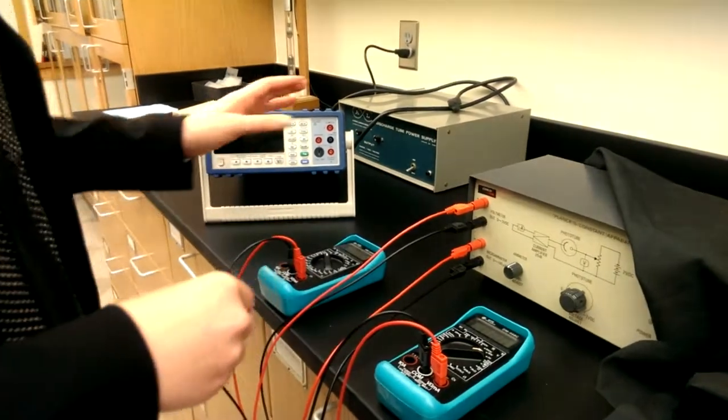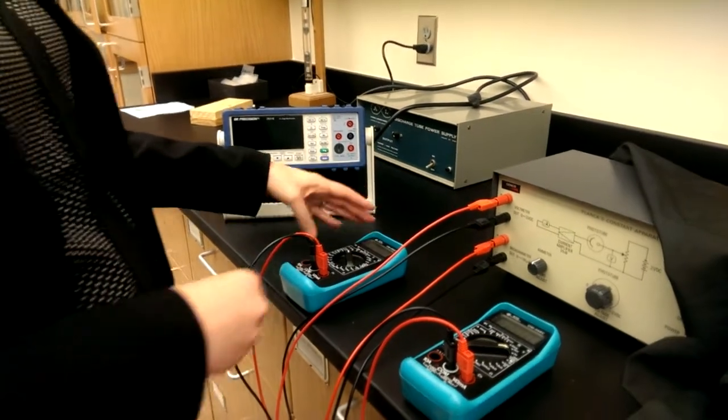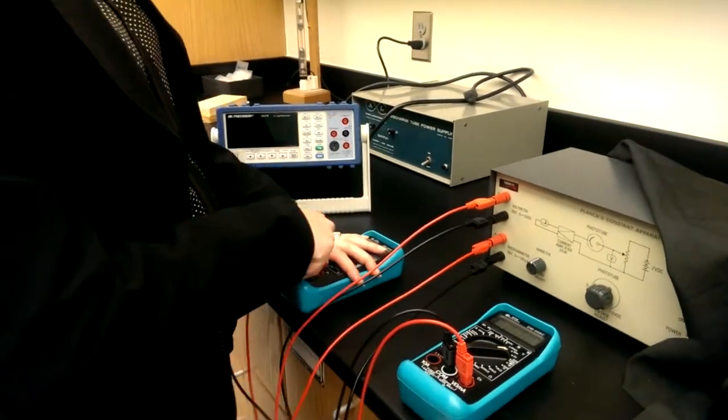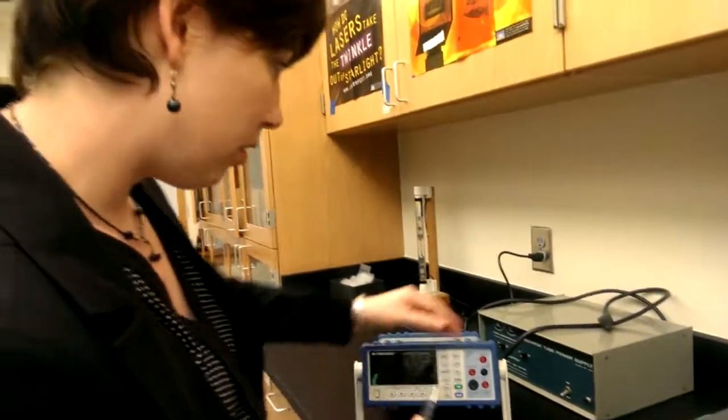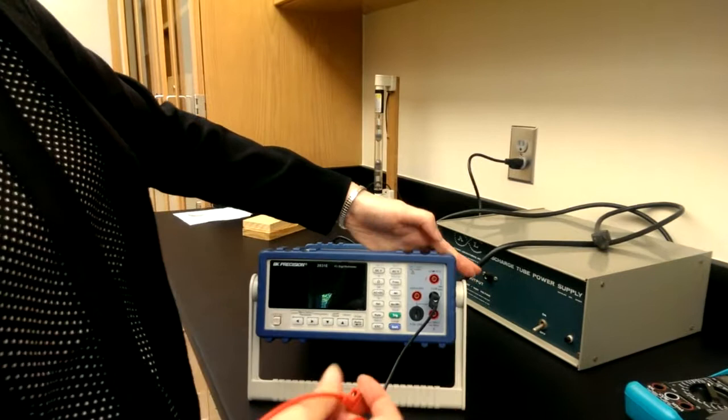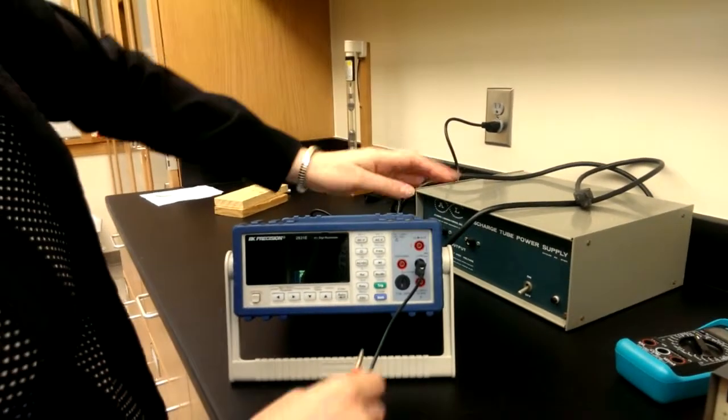So what I would recommend that you do instead: turn the device off and instead of using this multimeter, which isn't very sensitive, you're going to use this really nice multimeter. The black one goes to this COM here, and the red one goes to what reads 500 milliamps.